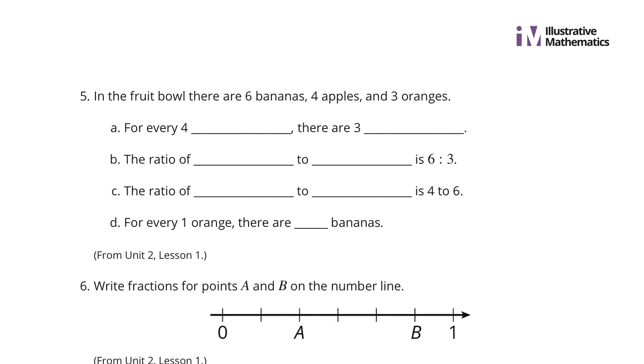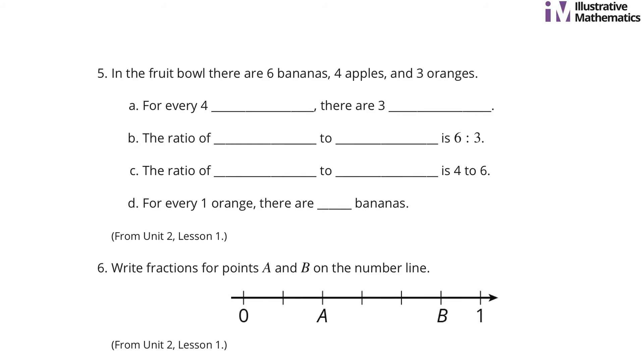Question 5. In the fruit bowl, there are 6 bananas, 4 apples, and 3 oranges. To answer the following questions, for every 4 apples, there are 3 oranges. The ratio of something to something is 6 to 3. Well, there's 6 bananas and 3 oranges, and the order here matters a great deal. So, 4 to 6 ratio, well, that would be 4 apples to 6 bananas. And now the toughest part is here. For every 1 orange, there are blank bananas. Well, for every 3 oranges, there were 6 bananas. Well, looks like I'm dividing by 3 or multiplying by 1 third there, and so this is going to be 2 bananas.